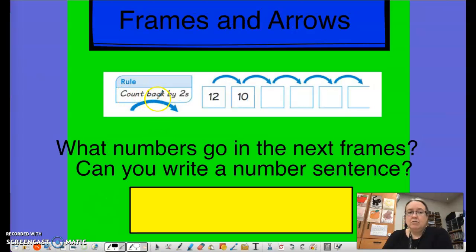Now here it says count back by twos. So we always kind of really have to think about what they're asking. So here, every time we see this arrow, we have to count back. So twelve, take away two is ten. Ten, take away two, eight would be eight.